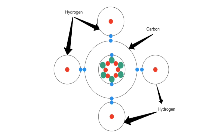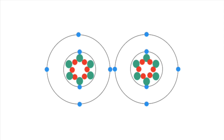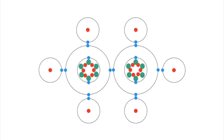For example, methane is carbon with four hydrogens. Imagine this: a carbon atom bonds with another carbon atom. Now this two-carbon structure can bond to six atoms.